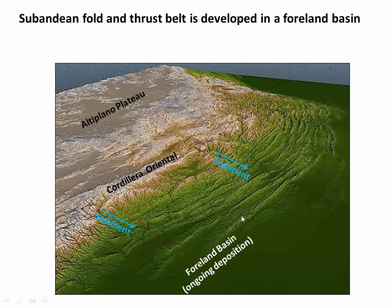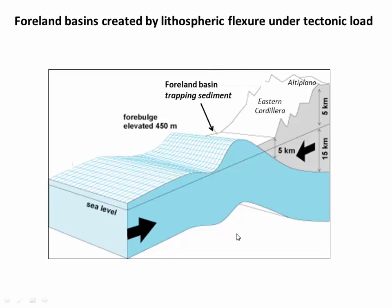So these folds are growing in an environment that's continually receiving new sediment. Foreland Basins form because the lithosphere is essentially like a piece of plywood — when you thicken a big mountain range like the Andes, you're placing a load onto it and it bends downward and flexes. That creates a space between the thick crust of the mountain range and the fore bulge, and it's into this space that we shed sediments. This is the Foreland Basin, and this is also where fold and thrust belts propagate outward from the mountain range.